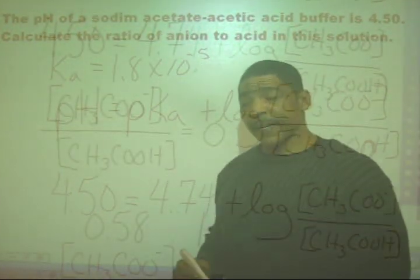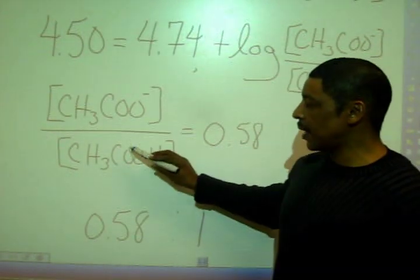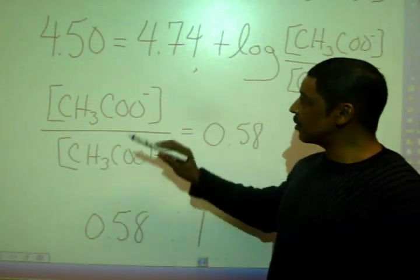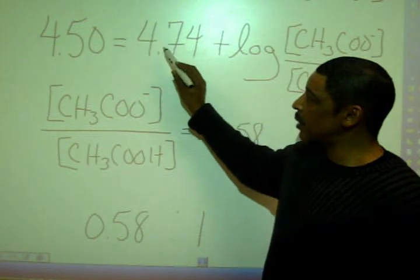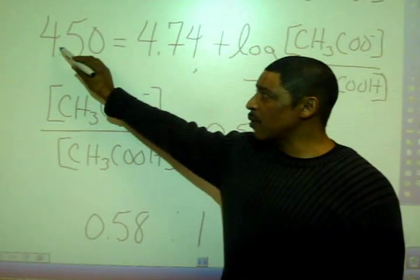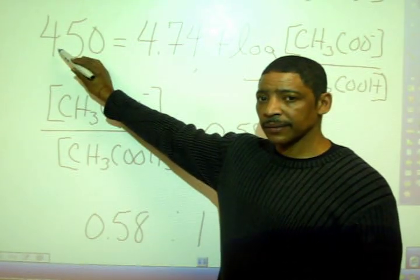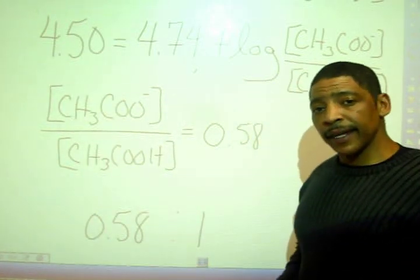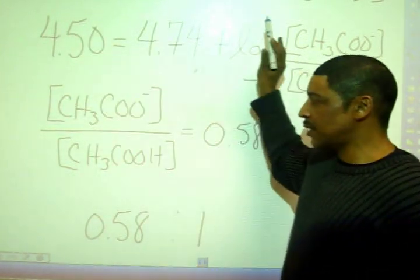We may now calculate the ratio of anion to acid by first subtracting 4.74 from 4.50. Then we take the anti-log of both sides of the equation.